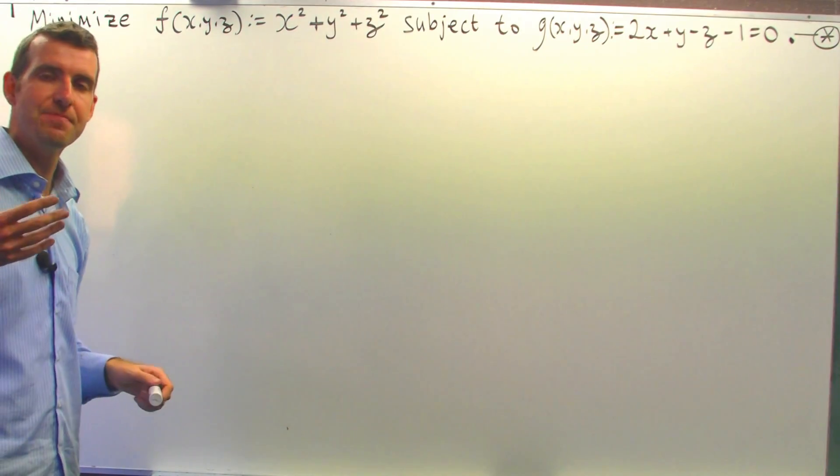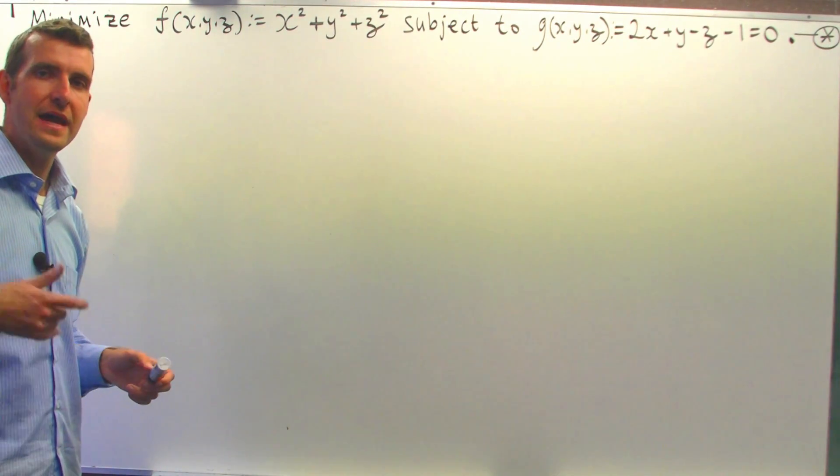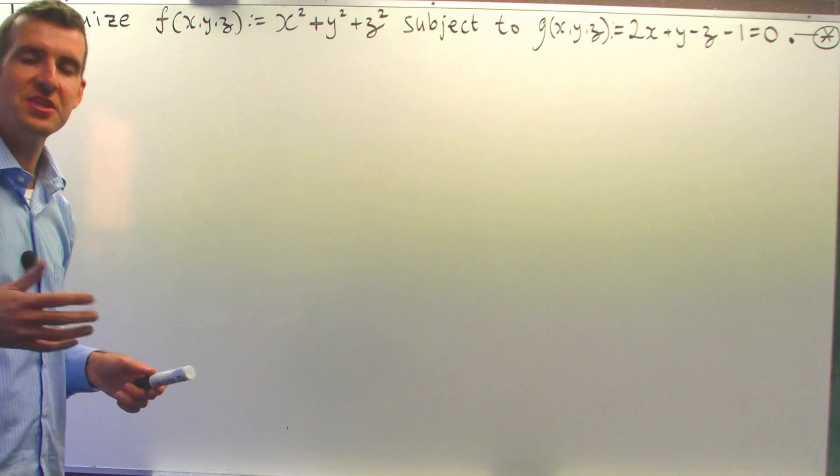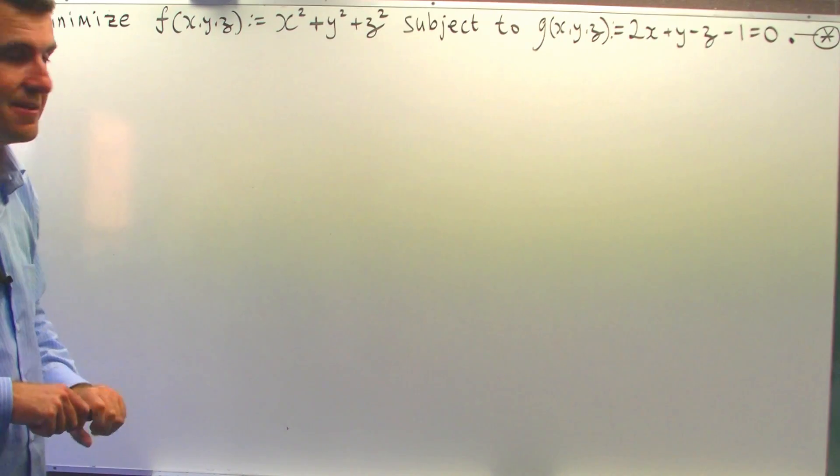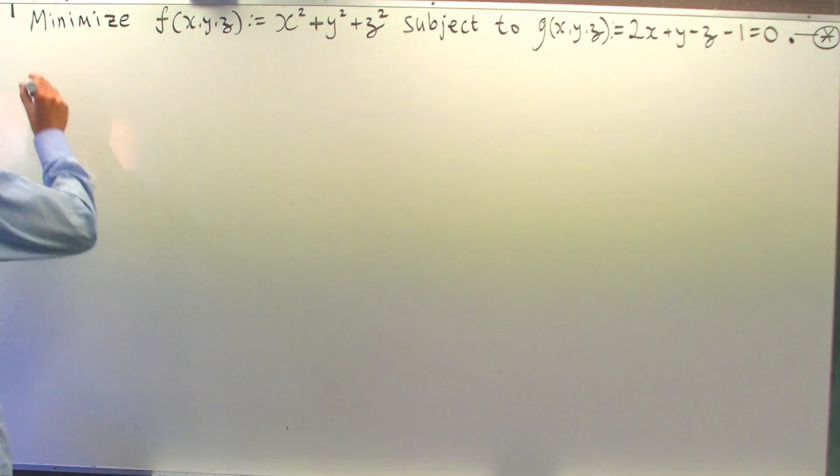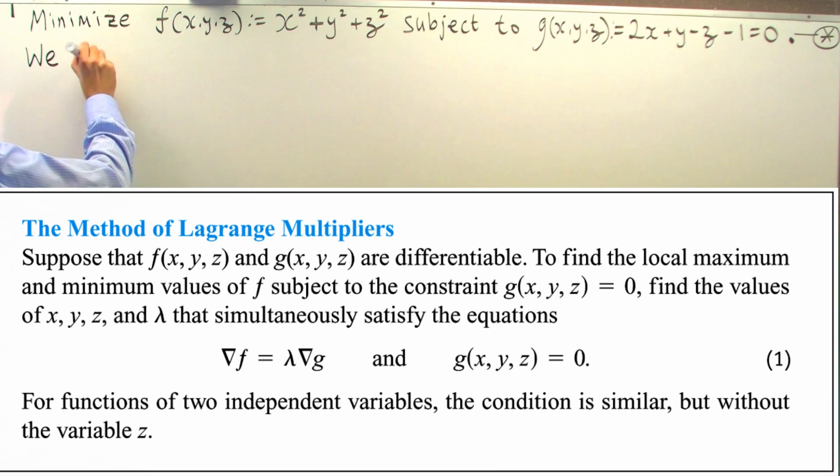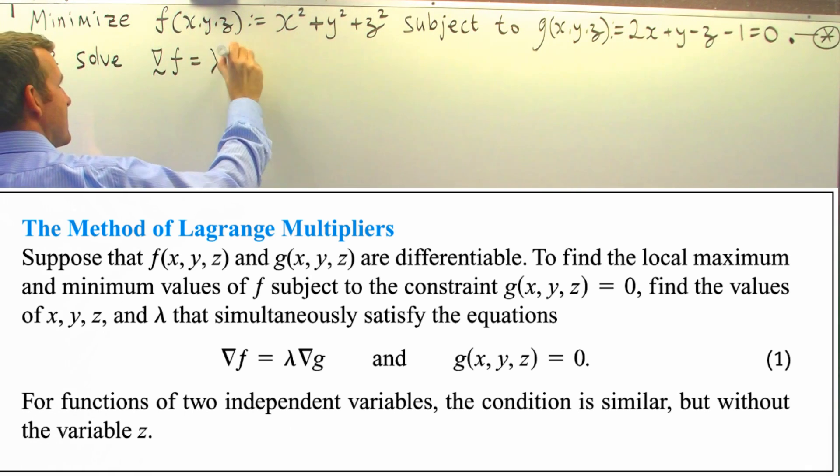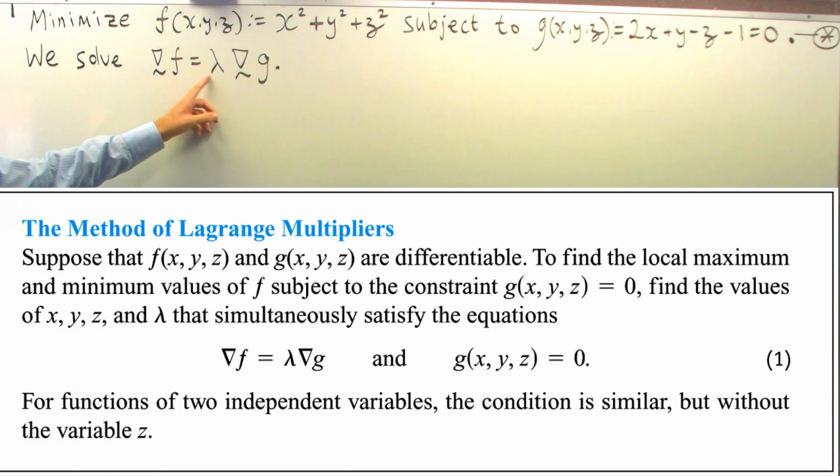This is a typical problem where we apply the method of Lagrange multipliers. So essentially, we solve the following equation: grad f equals lambda grad g. Now the lambda here is just a number and it's known as the Lagrange multiplier.